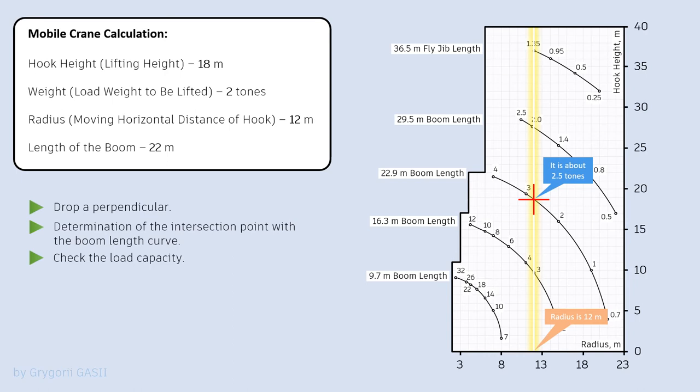These are load weight to be lifted, moving horizontal distance of the hook, and boom length.